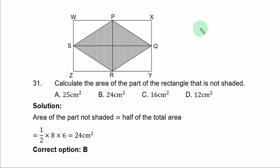Question 31. Calculate the area of the part of the rectangle that is not shaded. Solution. Area of the part not shaded is simply equal to half of the total area.